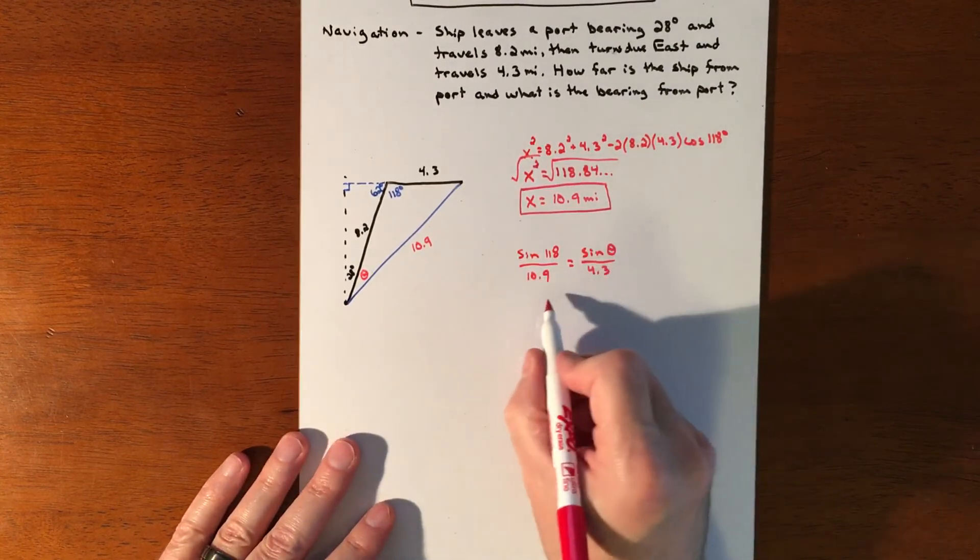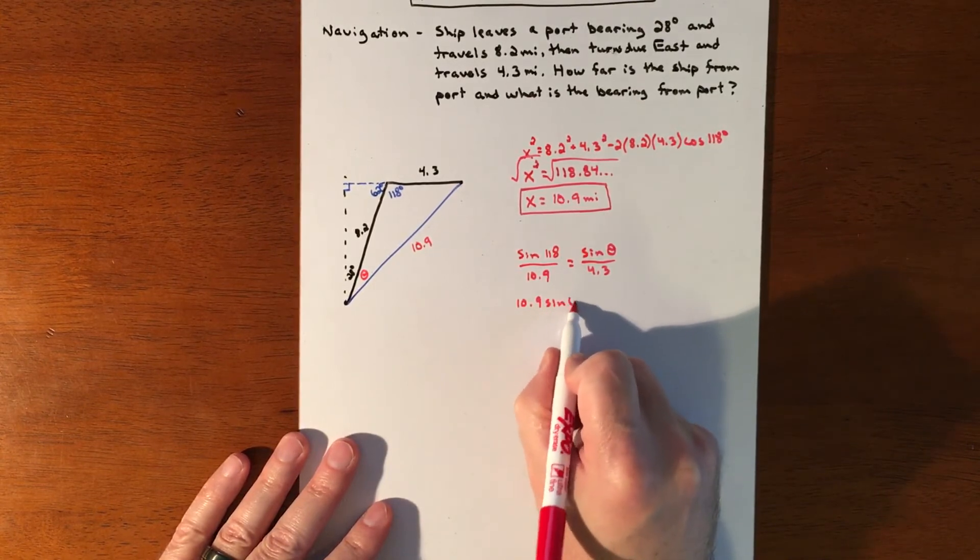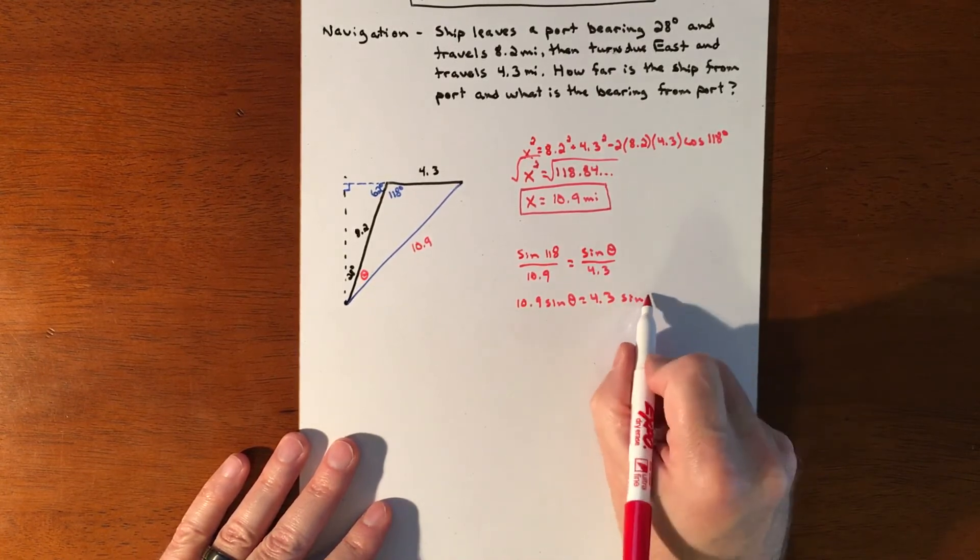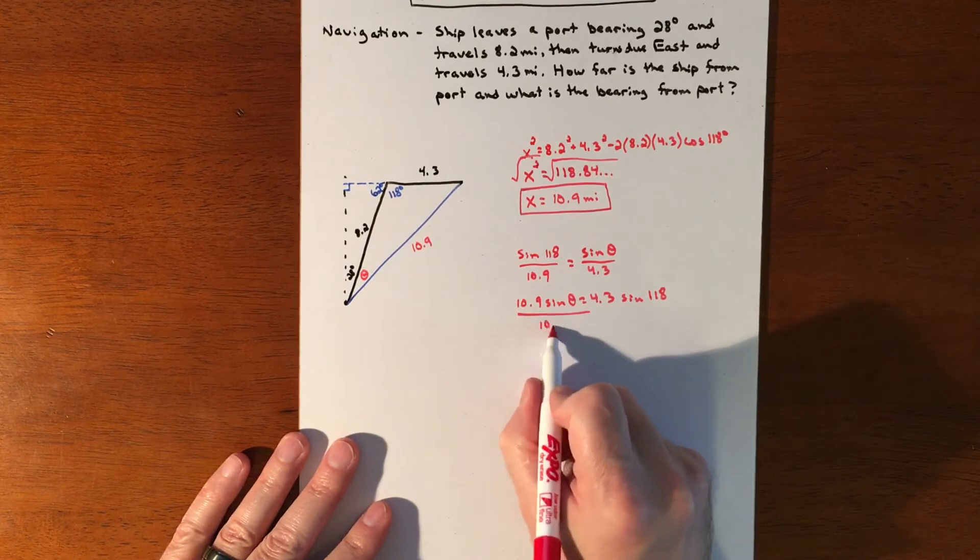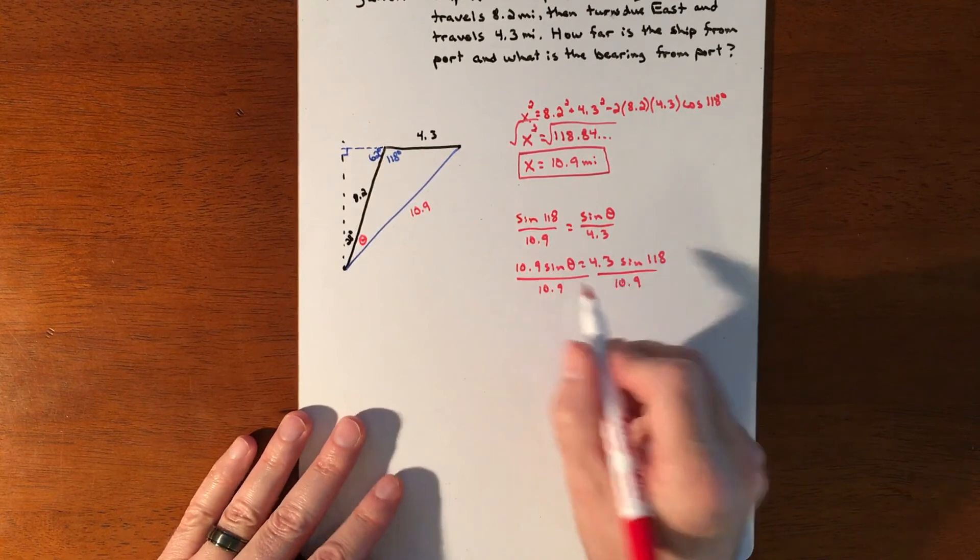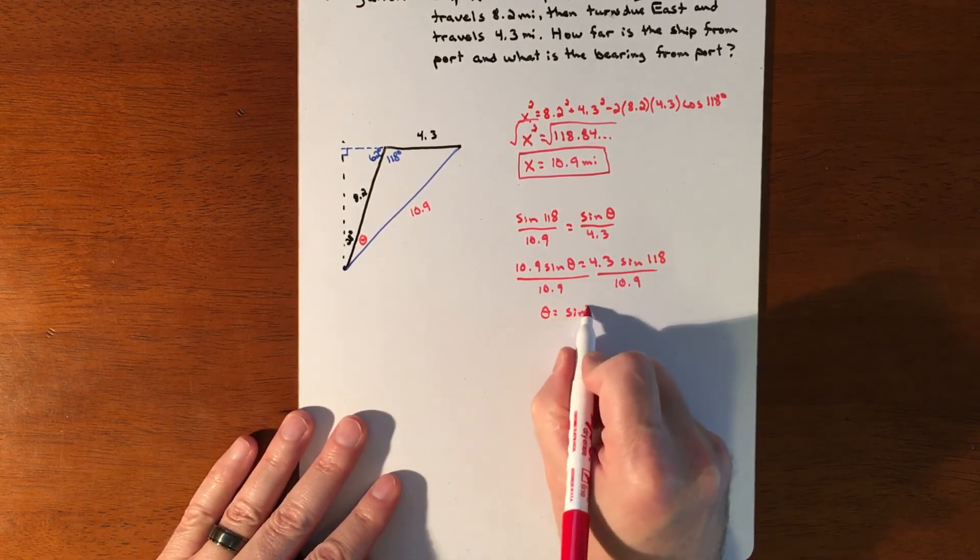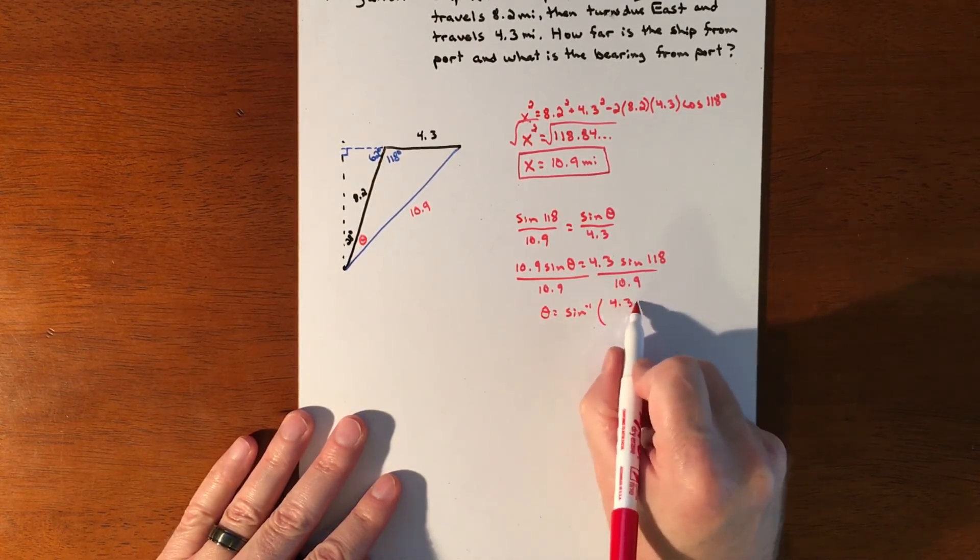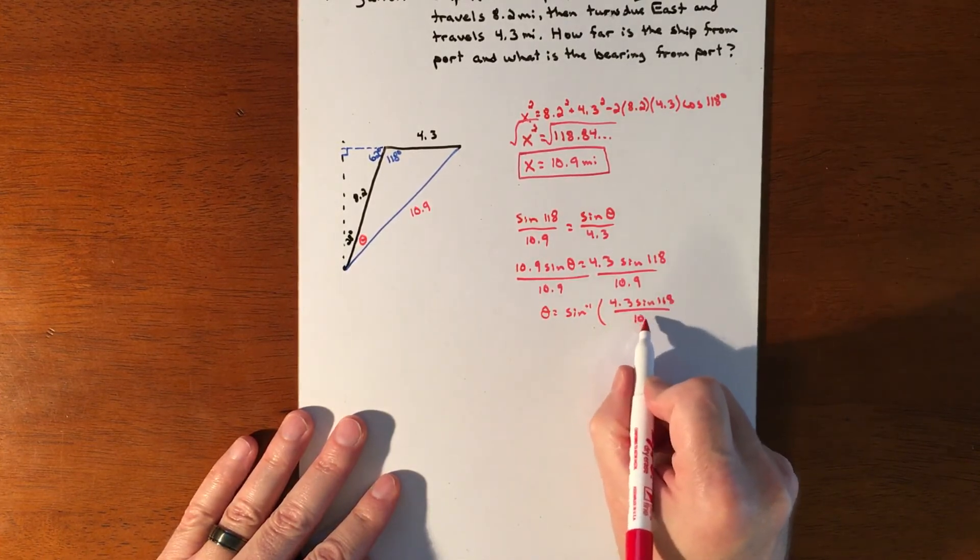So we're going to cross multiply and have 10.9 times sine of theta equals 4.3 times sine of 118. We'll divide by 10.9. And then we're going to have to do the inverse sine of that. So theta is going to be the inverse sine of whatever that turns out to be. So 4.3 sine of 118 over 10.9.